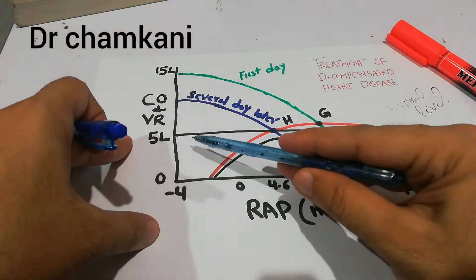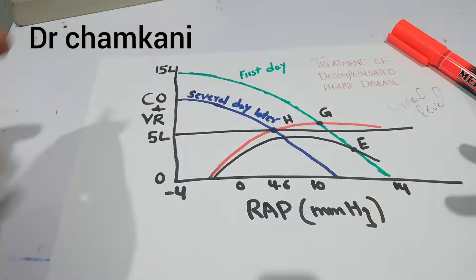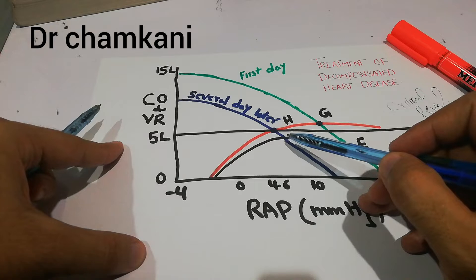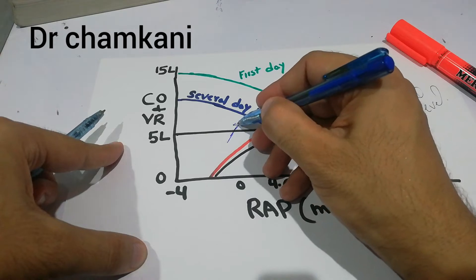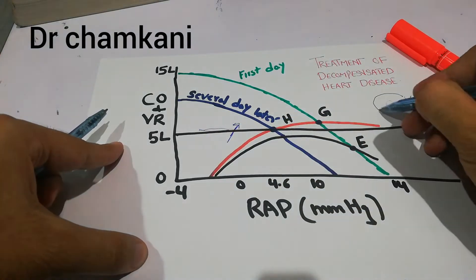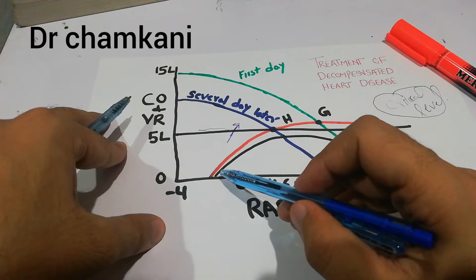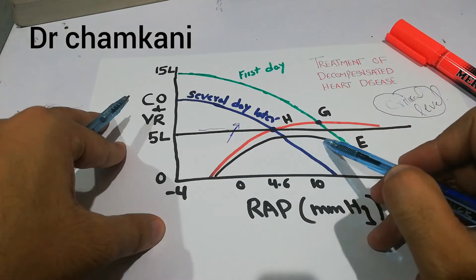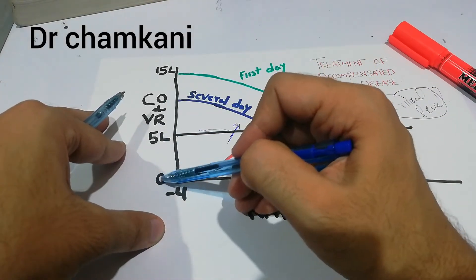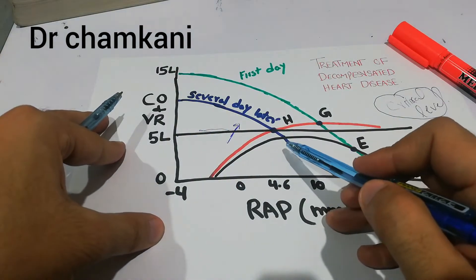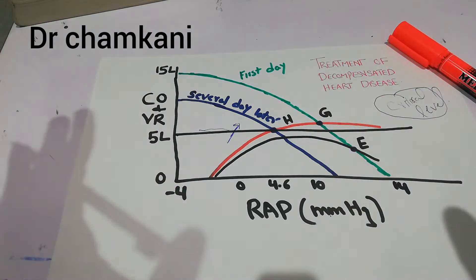The 5-liter mark is the critical level above which compensation occurs. If the cardiac output is below this mark, then the heart failure is basically decompensated. In compensated cardiac failure, the cardiac output curve goes above this critical line. But in decompensated cardiac failure, the cardiac output curve remains below the 5-liter mark, even with compensation attempts.